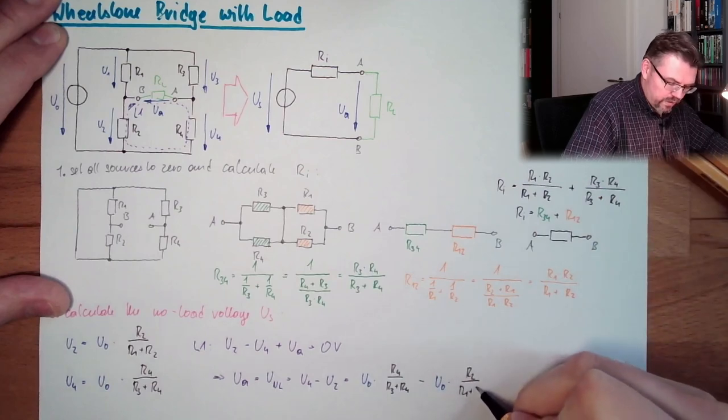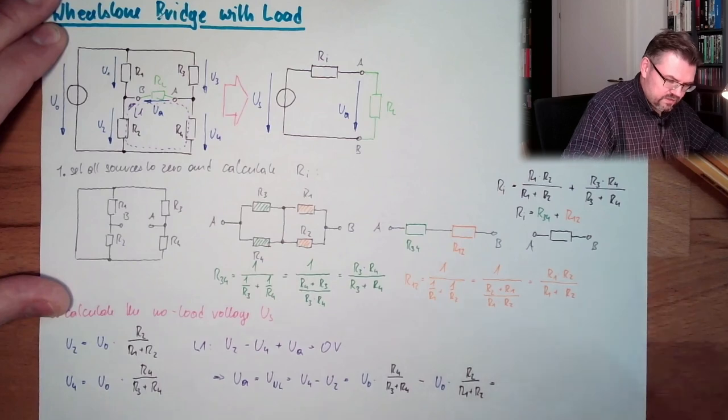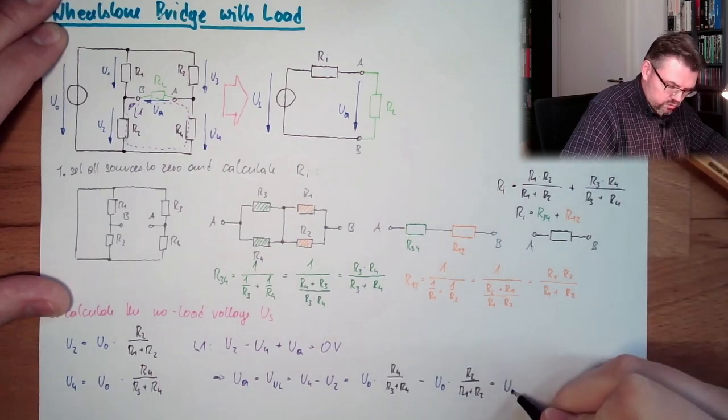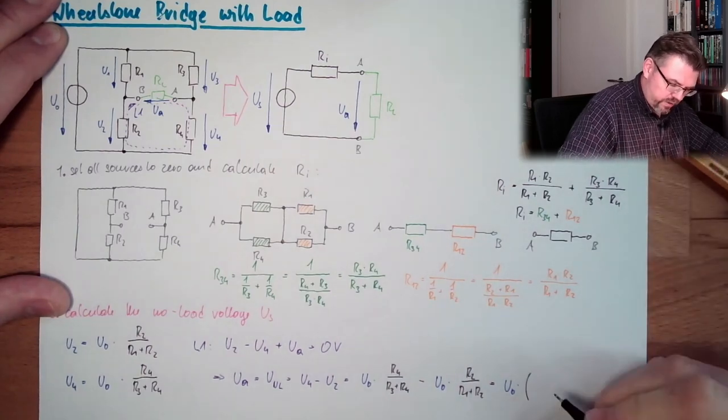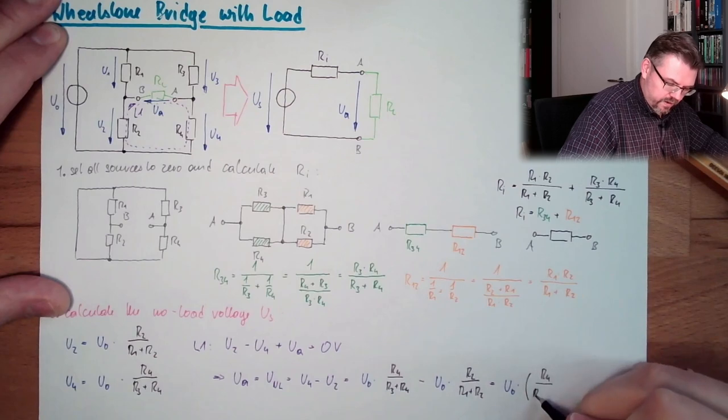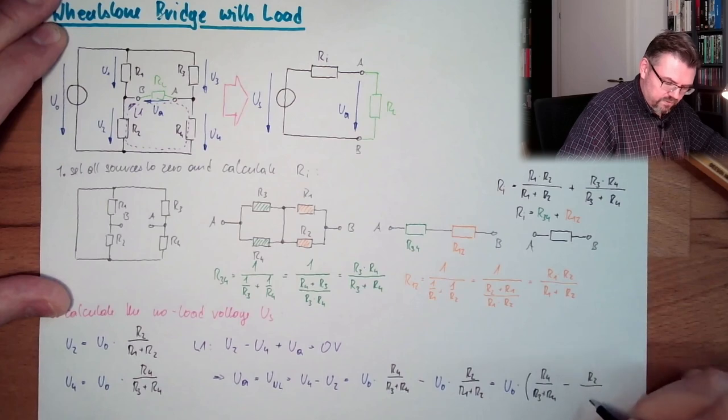And this equals U0 multiplied by, and now we make a bracket, R4 divided by R3 plus R4 minus R2 divided by R1 plus R2.